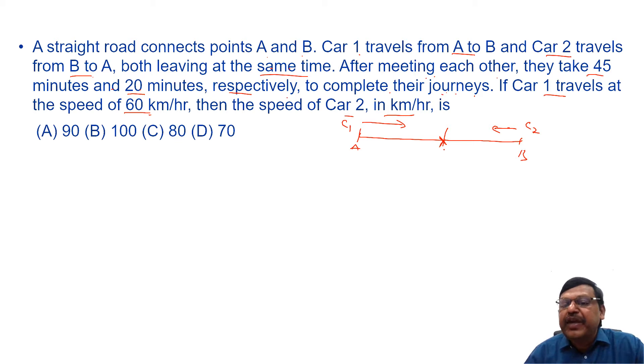Suppose if they met at a place, say P. So this car 1 takes 45 minutes to travel from P to B. Car 2 takes 20 minutes to travel from P to A. These are the time taken to reach the destinations after meeting. We know the speed of car 1 is 60 km per hour. We have to find the speed of car 2.